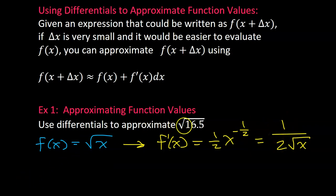The key is to take the square root of 16.5 and rewrite it as 16 plus 0.5. Compare this to our formula. The 16 is the x, and the 0.5 is the delta x. So let's keep going. This should be approximately equal to f of x.